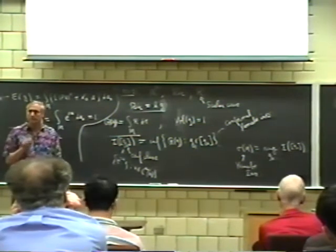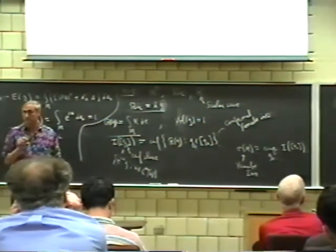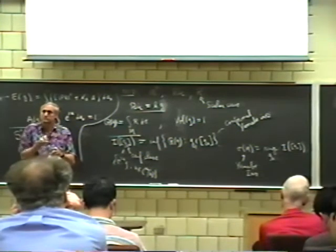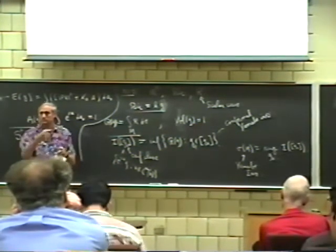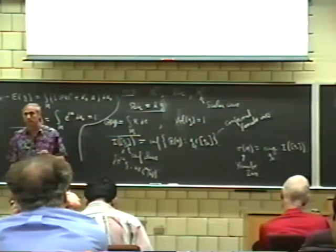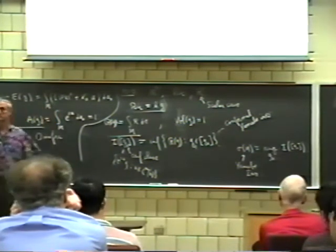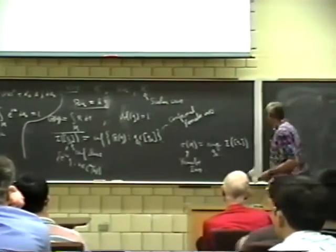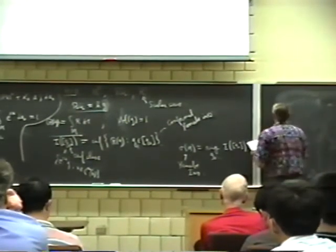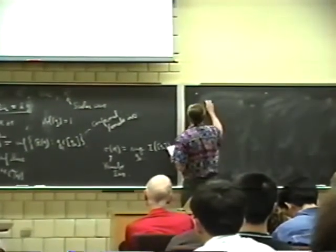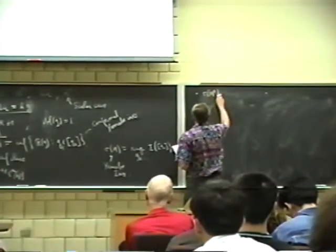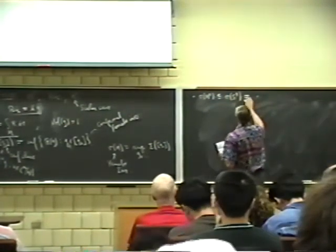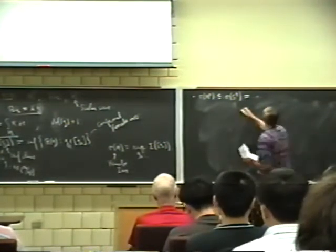If you study the linearization around a constant curvature metric like S3, the metric on S3 minimizes when you move in the conformal direction locally, and maximizes when you move in the transverse direction. That's the reason for considering this sup-inf. The basic facts are: first, for any three-manifold M3, sigma(M3) is always less than or equal to sigma(S3). Sigma(S3) is known—it's achieved by the standard metric on S3, and equals 6 times Vol(S3)^{2/3}.